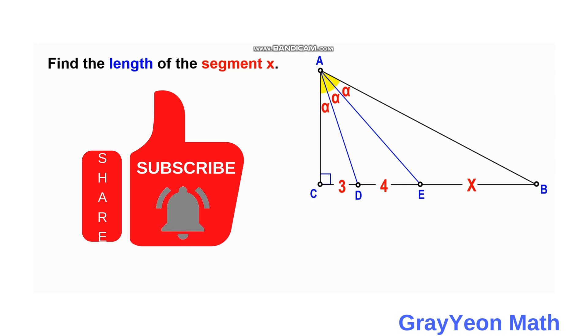The segment BC, the base, is divided into three parts opposite to these three equal angles, each measured as alpha. So angle A is divided into three by alpha, and this angle is opposite the divided segment BC, which is divided into three units, four units, and x units. We are required to find the length of the segment x of this right triangle ABC.